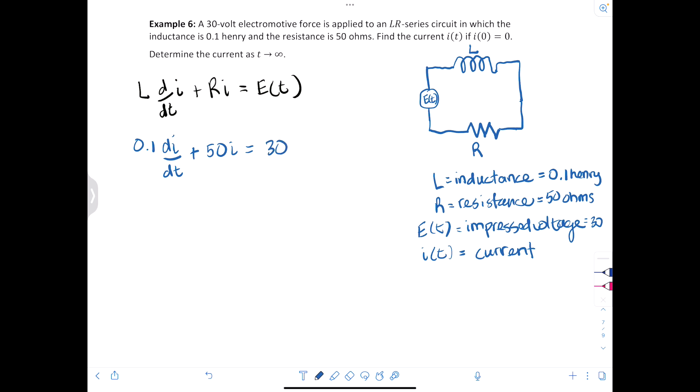And then we need to have a coefficient of 1 in front of that dI/dt. So if I multiply both sides by 10, I'll clear that out. So we'll have dI/dt plus 500I is equal to 300.